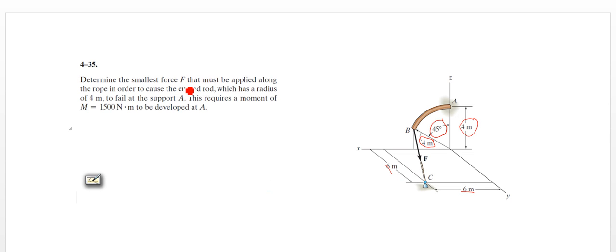And looking at the question, what do we have? We need to find the smallest force F, so that we can cause failure of that curved rod at point A. And that tells us here that the moment that's required to do that is a moment of 1500 newton meters at point A. So what do we know about moments? We know that a moment is a vector. It's equal to the position vector at the location of the applied force crossed with that force vector.